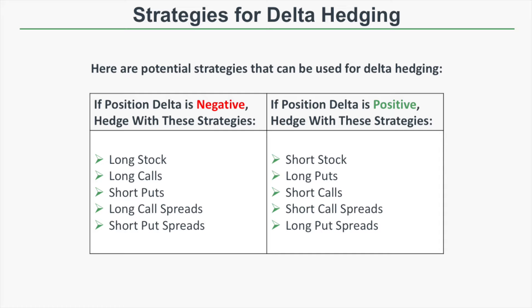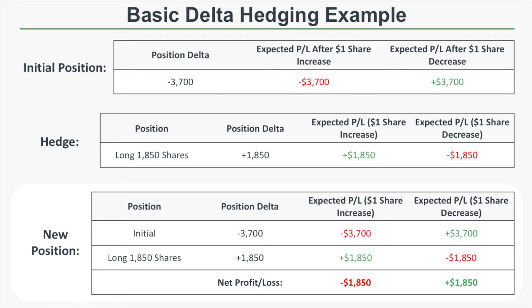All of those strategies are positive Delta strategies, which means if you implement them on top of a negative Delta position, the overall directional risk will decrease. For hedging a positive Delta position, you can use short stock, long puts, short calls, short call spreads, or long put spreads. All of those strategies have negative Deltas, so implementing them on top of a positive Delta position will decrease the overall Delta and therefore reduce directional risk.